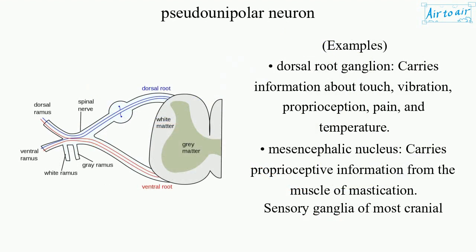Examples. Dorsal root ganglion — carries information about touch, vibration, proprioception, pain, and temperature. Mesencephalic nucleus — carries proprioceptive information from the muscle of mastication.